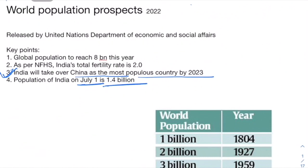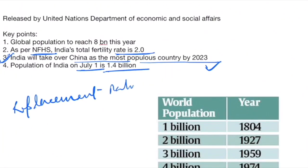This is a cause of concern given India's limited resources — limited water, land, and everything else. However, one positive thing is that according to NFHS, India's total fertility rate is only 2.0, which is below the replacement rate of 2.1. But some states like Bihar, Uttar Pradesh, Jharkhand, and Chhattisgarh have higher fertility rates and need to work on population control.